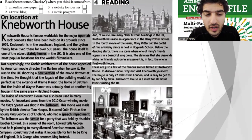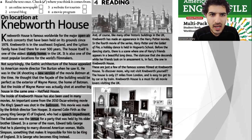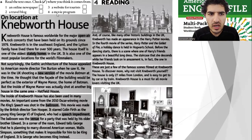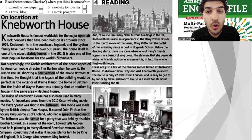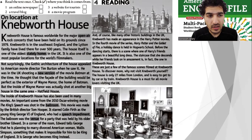This is part four — reading. Read the text once and check where you think it comes from. Is it from an online newspaper, a travel blog, a website for tourists, or a movie program? Take your time and read it. Okay — let me read it myself: 'On location at Knebworth House. Knebworth House is famous worldwide for the major open-air rock concerts that have been held on its grounds since 1979.'